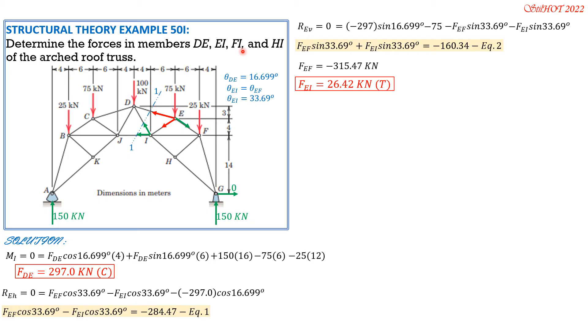Next is FI. We cannot find that yet because we do not know FG. So HI. Observe that Joint H here: HI and GH are collinear, and there's this oblique member FH or HF. This is a zero force member by Case 2.